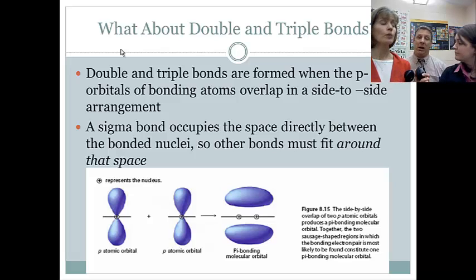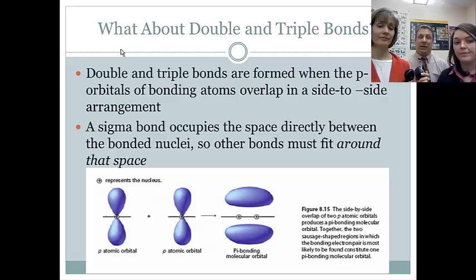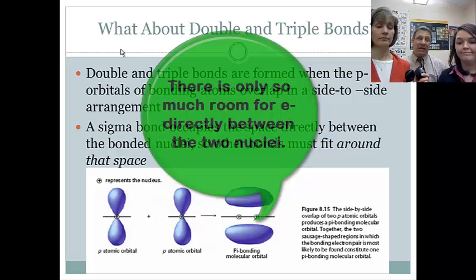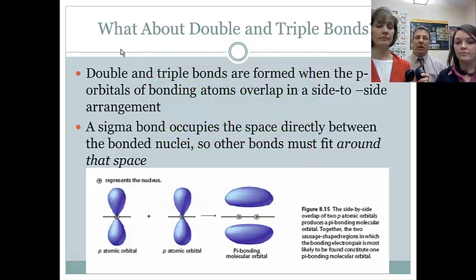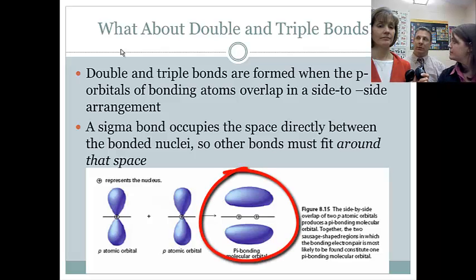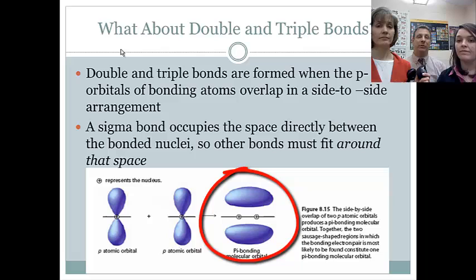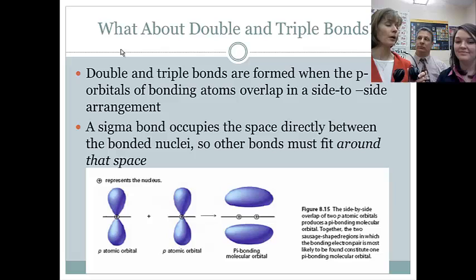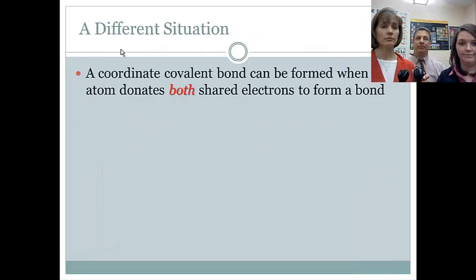There's already an electron pair in that space between the two nuclei, and all electrons, whether they're being shared happily or not, they're all negatively charged, and those negatively charged particles just cannot be squeezed into that small of a space. So the second bond that's formed, this pi bond, has to reach out around the existing sigma bond that's in there between the two nuclei. So that's having one sigma bond and then one pi bond is how we get a double bond.